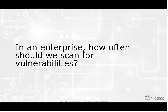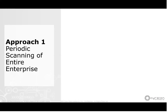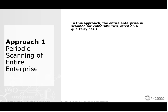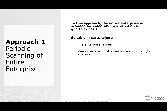The key question here is: in an enterprise, how often should we scan for vulnerabilities? There are a couple of approaches. The first and most common approach is periodic scanning of the entire enterprise. All the systems in the enterprise are scanned on a periodic basis, normally quarterly. This is suitable when the enterprise is small so you can hit everything at once, or when resources are constrained, since this massive scan happens less often. We also see this when scanning is done by an external agent such as an MSSP.